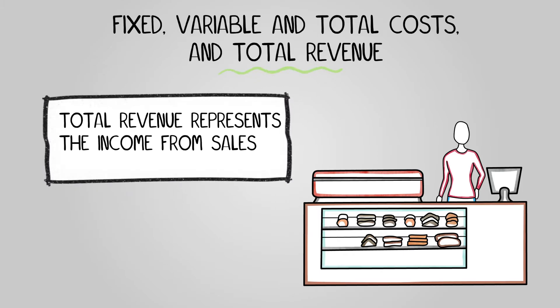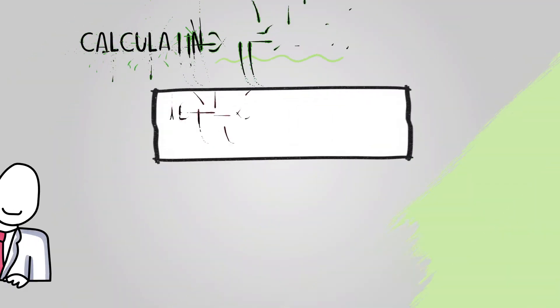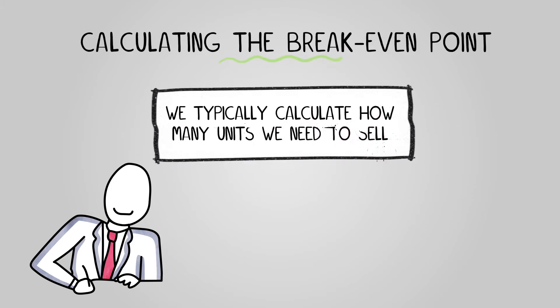This could be from various products, services, or even dividends from investments. Summing these gives us the total revenue. When we calculate the break-even point, we typically calculate it not in the amount we need to earn to break even, but in how many units we need to sell.